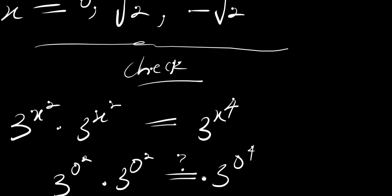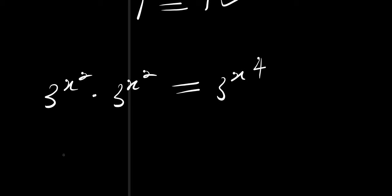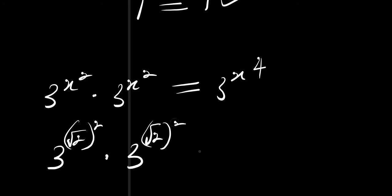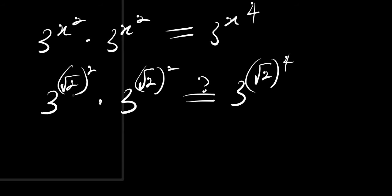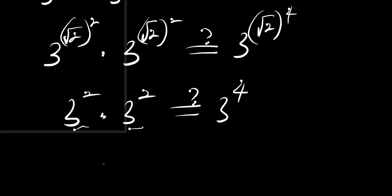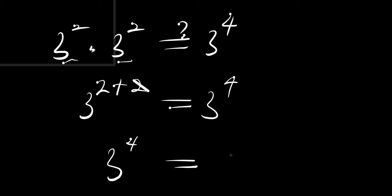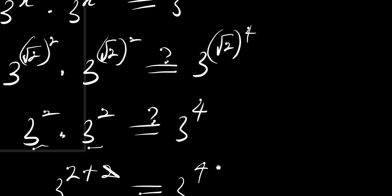Now let's check for root of 2. We have 3 power root-of-2 squared times 3 power root-of-2 squared equals 3 power root-of-2 to the 4. Root of 2 squared is 2, so we have 3 power 2 times 3 power 2. Adding exponents gives 3 power (2 plus 2) equals 3 power 4, and 2 plus 2 is 4, so 3 power 4 equals 3 power 4. This confirms x equals root of 2 is correct.